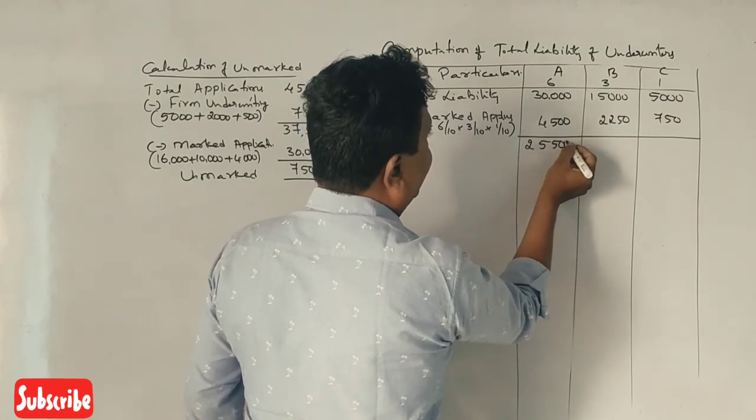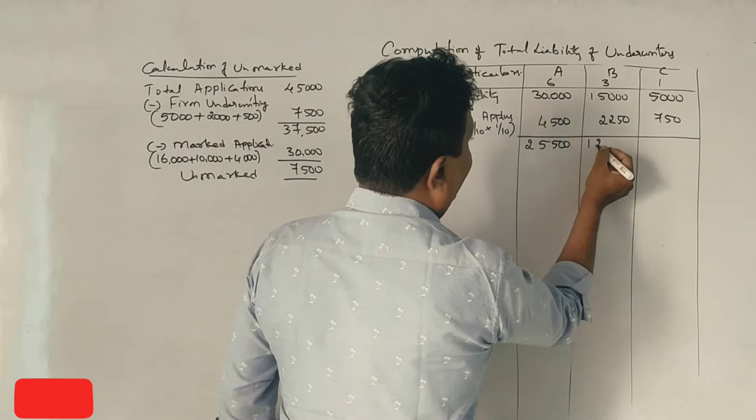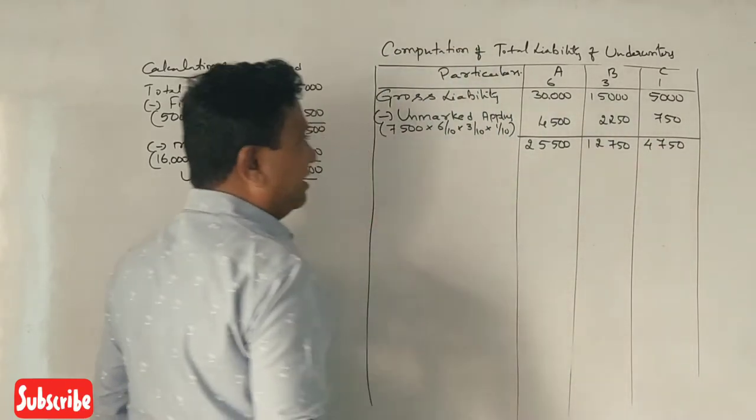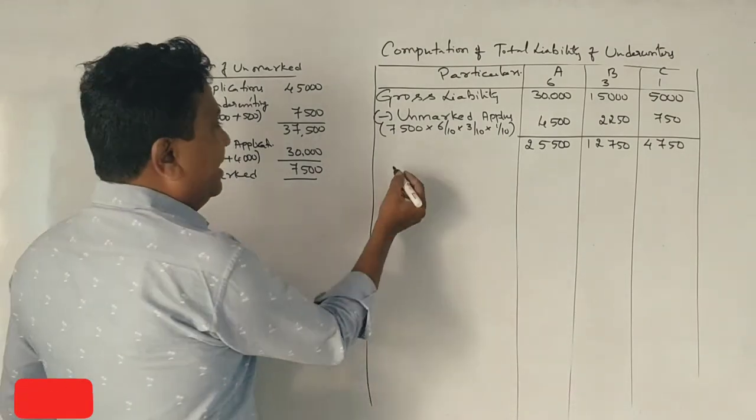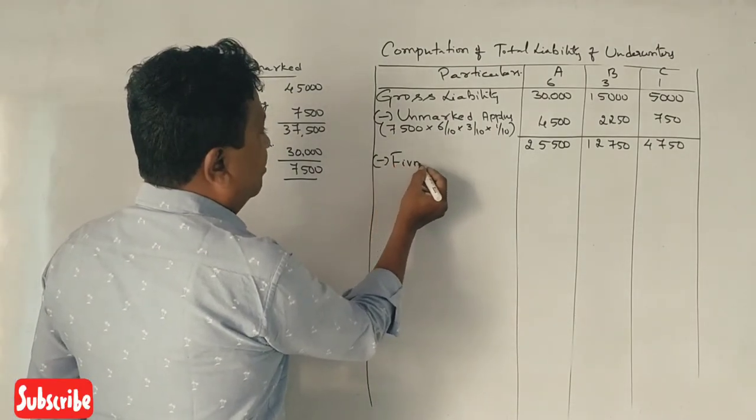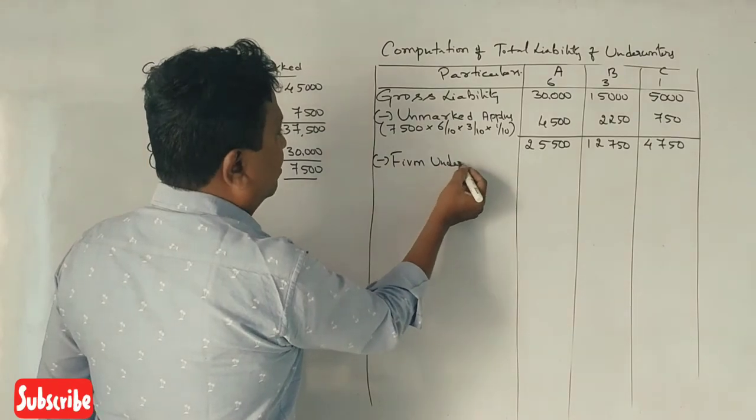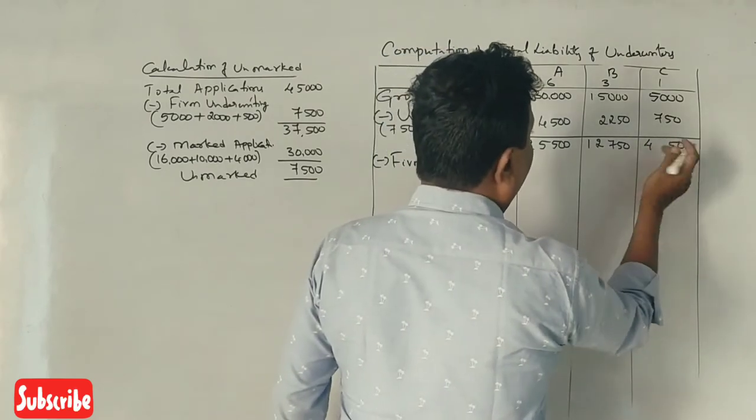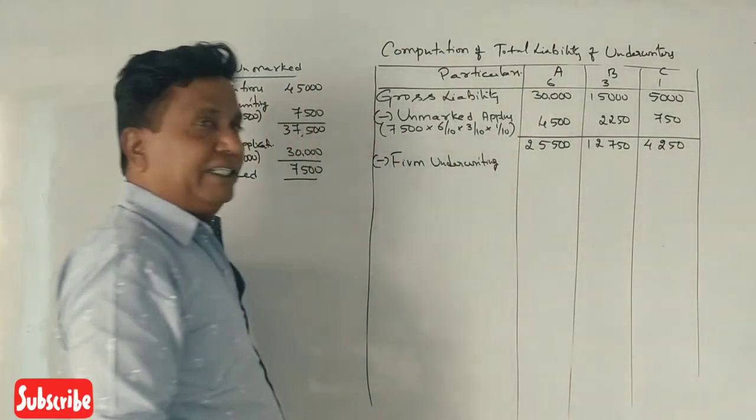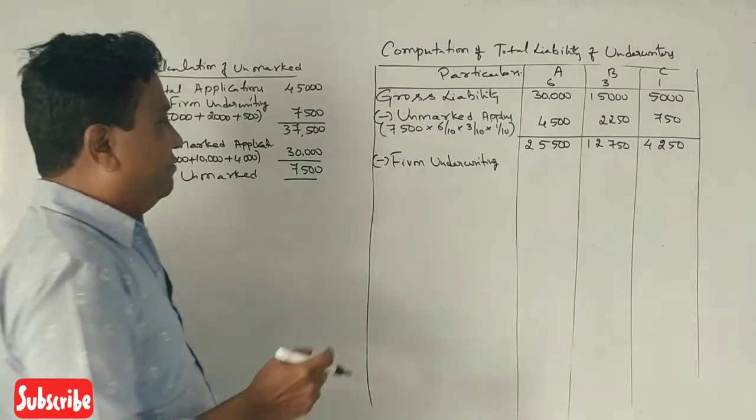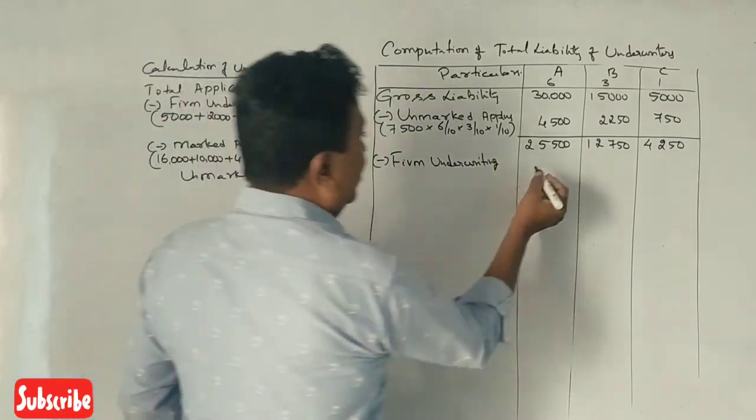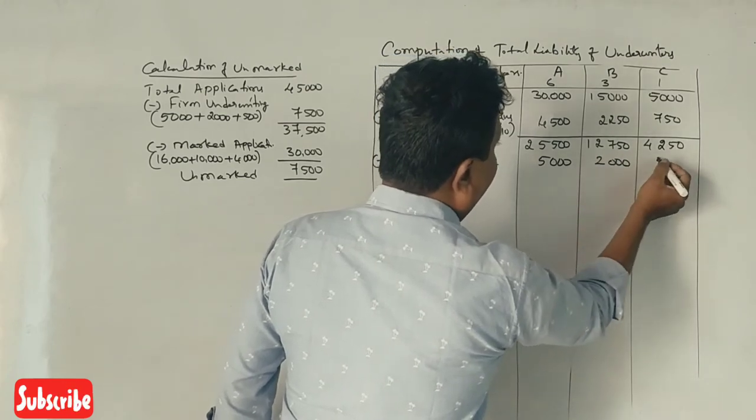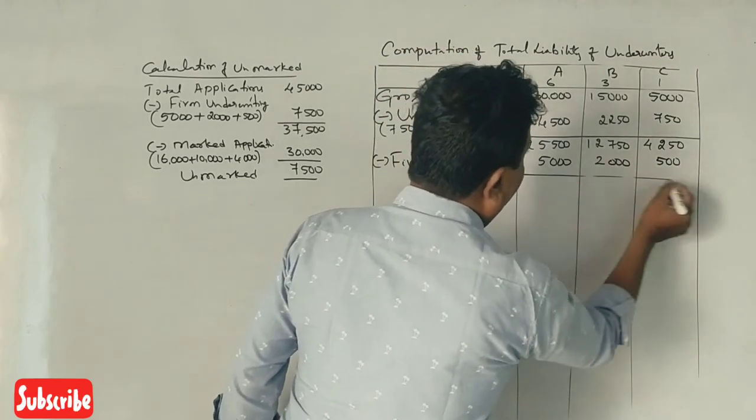5,750, 2,250, 4,750. So let's put this here: 4,500, 2,250, 750. Now, the firm underwriting is 5,000, 2,500, 500. Correct?